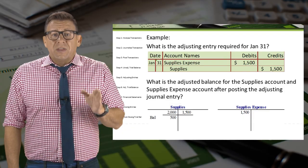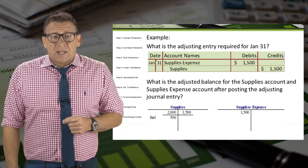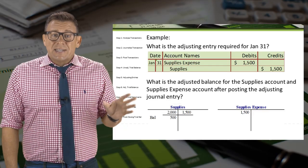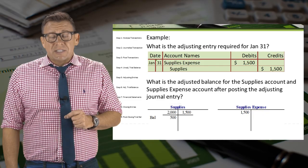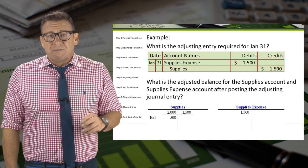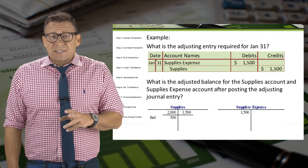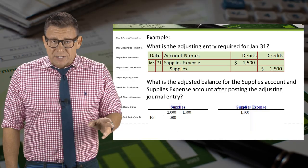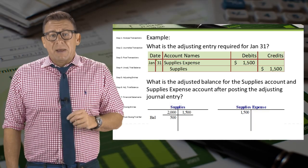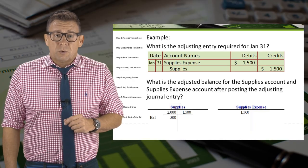Now the account balances are correct. The asset supplies has an adjusted balance of $500, and the expense account supplies expense has a balance of $1,500 for January.